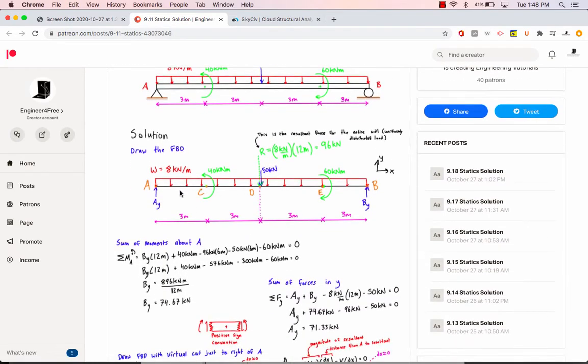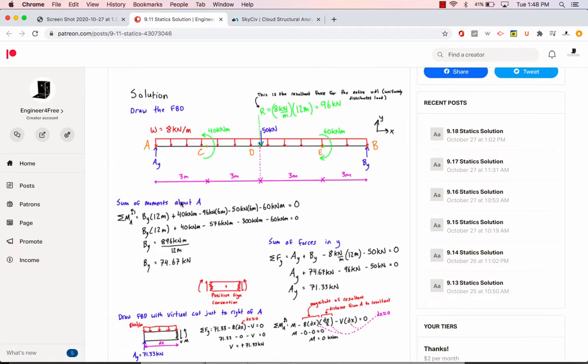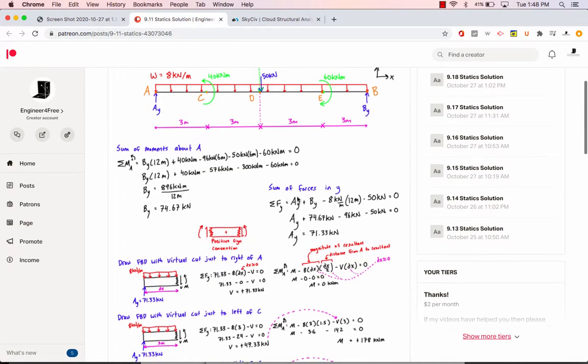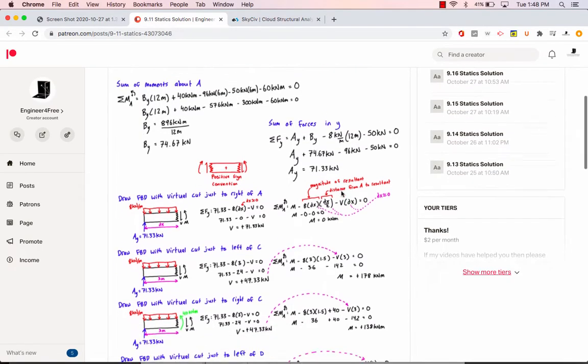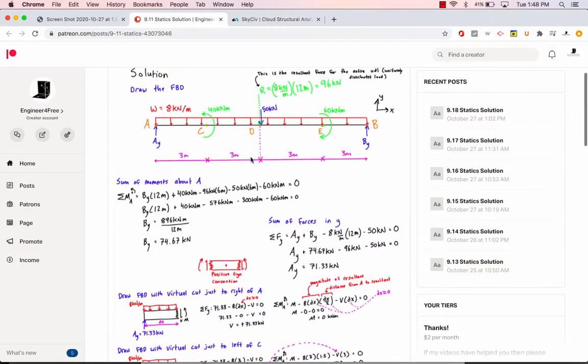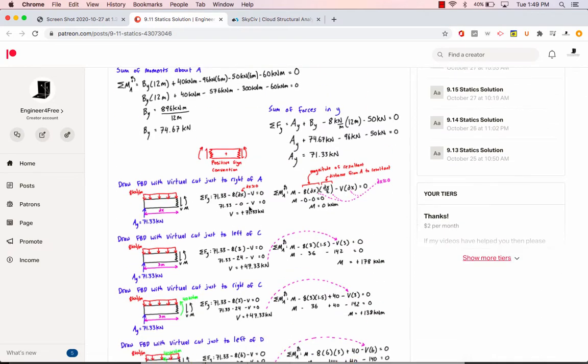When we're looking at it here, we have the same beam, it's 12 meters long, all the different loads. As we scroll down, you first have to solve for the reactions using the sum of moment about A equation and then the sum of forces in the Y direction. There's a few different ways you can go about solving it, but this time I opted to take basically a virtual cut just before and after every time there's something starting or stopping.